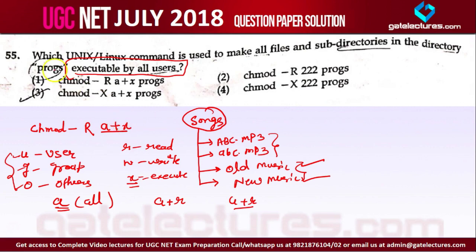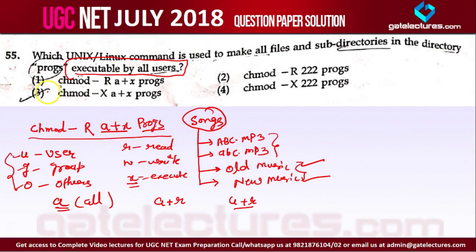So the command is A+X applied to the 'programs' folder. You want to give executable access to the programs folder to everyone, recursively. The full command is: chmod -R a+x programs. So the answer for this question is option one.